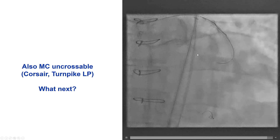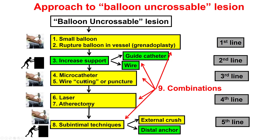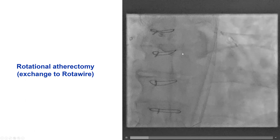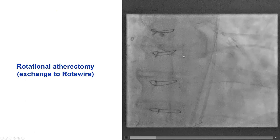So what to do next? This is the algorithm for balloon crossing. We tried the small balloon. We tried grenadoplasty, rupturing the 1.0 and 1.5 balloons without success. We had very strong support from the externalized wire. We tried microcatheters — it did not work. The next step should probably have been laser, but we instead tried to do atherectomy.